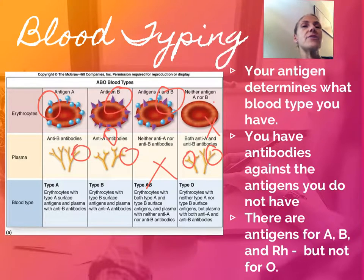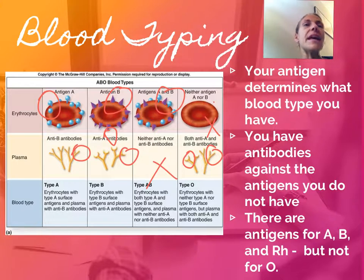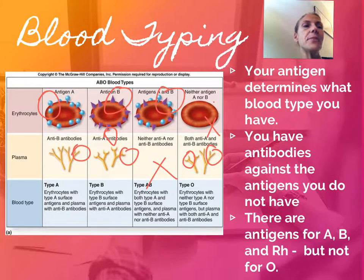There's a third type of antigen we have to worry about — the Rh factor. If you have the Rh factor, you're considered Rh positive. For example, A positive blood has both the A antigen and the Rh antigen. If you don't have the Rh antigen, you can make Rh antibodies after being exposed to it.